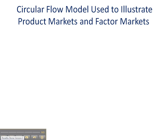Like the production possibility curve or production possibility frontier that we discussed in earlier lessons, the circular flow model is another one of those general models in economics that can be used for both microeconomics and macro. Today I'm going to be illustrating the use of the circular flow model to illustrate a set of microeconomic topics, that being product markets and factor markets.